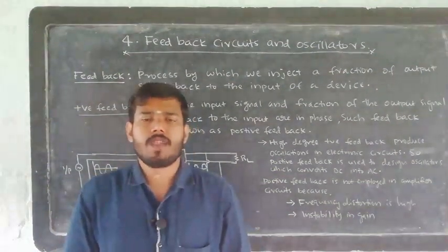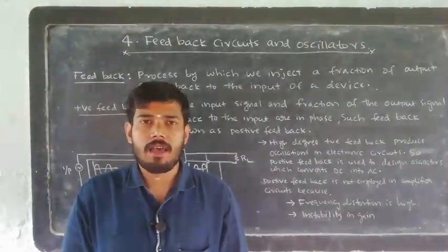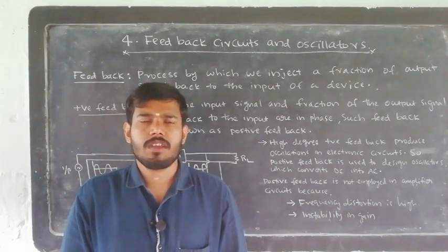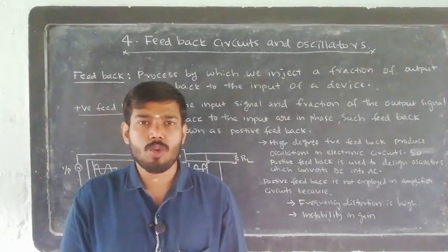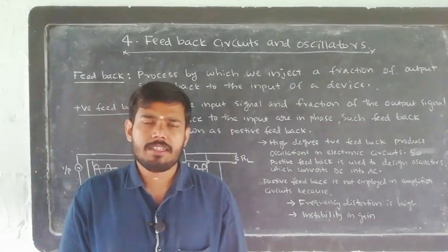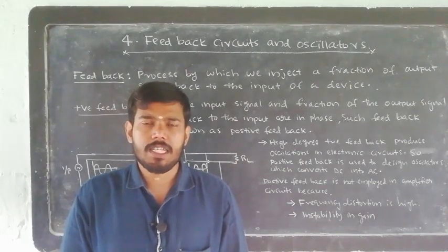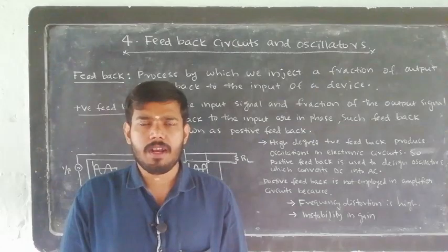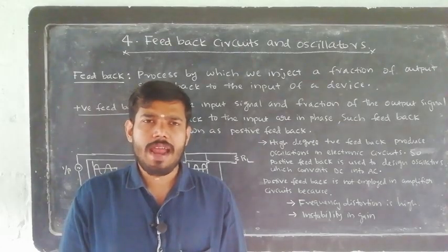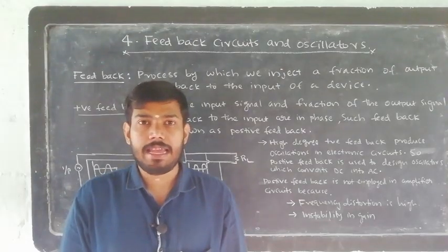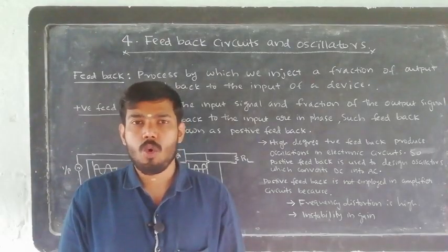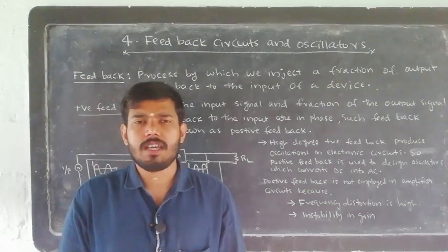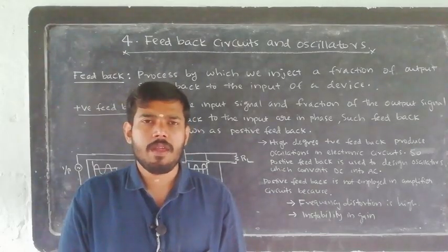Hi students, in the 4th chapter of our electronics paper, we have one chapter called the Transistor. The name is Feedback Circuits and Oscillators. In the 4th chapter, we have discussed the Multistage Transistor Amplifiers. That is why we have discussed the Transistor Amplifiers in the previous chapter. The Transistor Amplifier is associated with feedback circuits and oscillators.